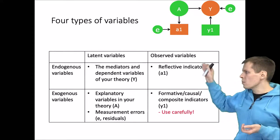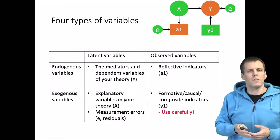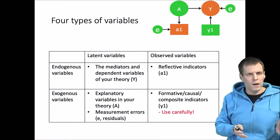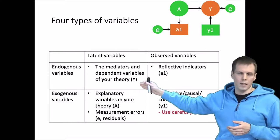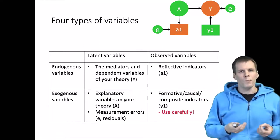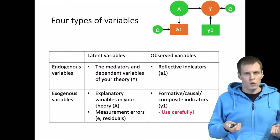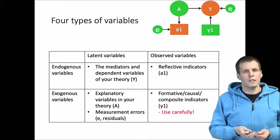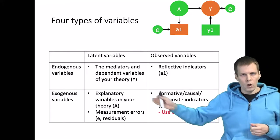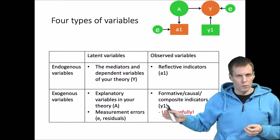In a structural equation model we have a typology of latent variables versus observed variables, and endogenous variables versus exogenous variables. A variable in an SEM model is endogenous if it has incoming regression paths. If it does not have incoming regression paths, then it is exogenous — endogenous if we have incoming paths, exogenous if we don't.